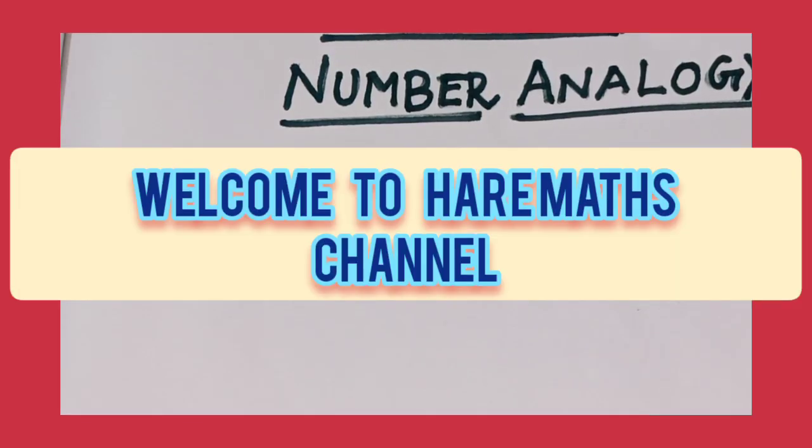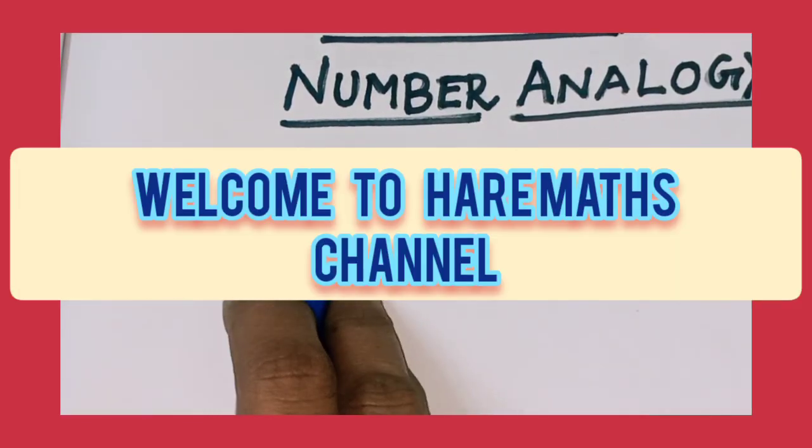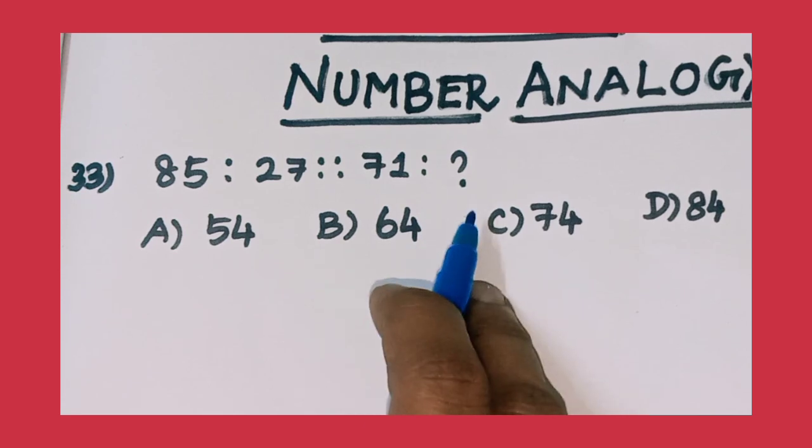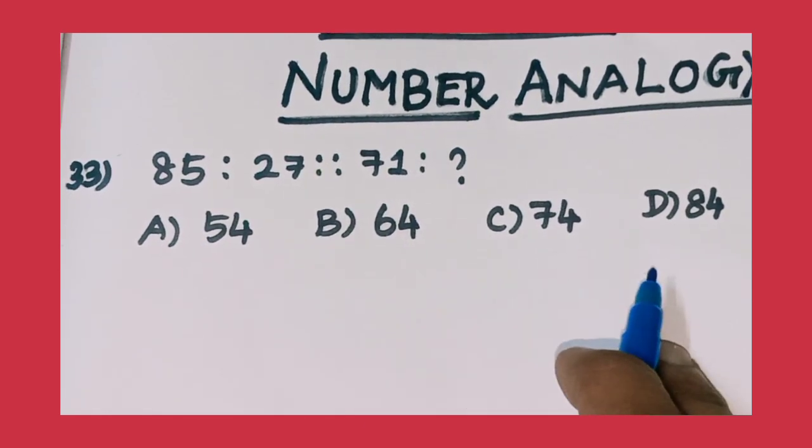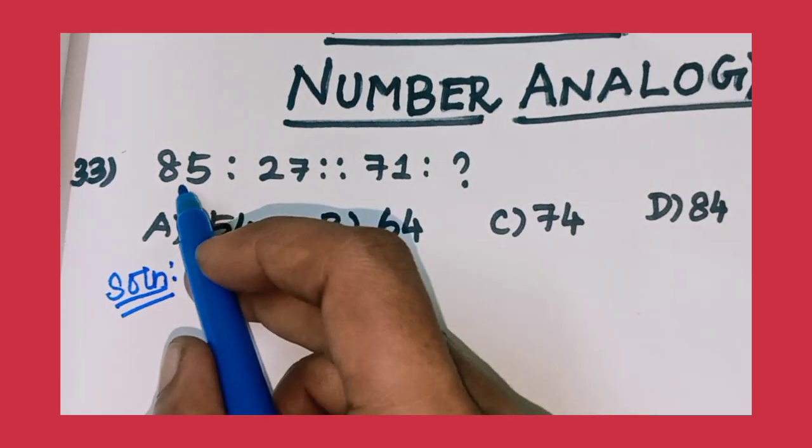33rd Question: 85 ratio 27 proportion 71 ratio question mark. Option A 54, Option B 64, Option C 74, and Option D 84.